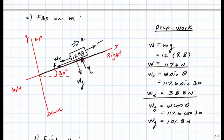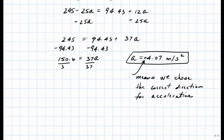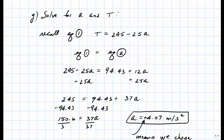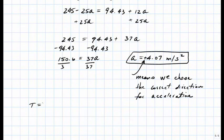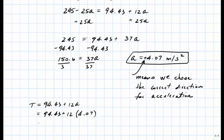Let's now calculate the value for the tension — just a one-step process. Using equation number two: T equals 94.43 plus 12A equals 94.43 plus 12 times 4.07. The tension equals 143.3 Newtons.